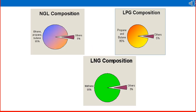Looking at the composition chart: NGL is composed of ethane, propane, and butane at approximately 95% plus some pentane plus, which is sometimes separated and re-injected into crude oil to improve its API gravity. LPG contains mainly propane and butane at around 95%. LNG is predominantly methane (C1) at around 95%. These are the general compositions of the natural gas derivatives.